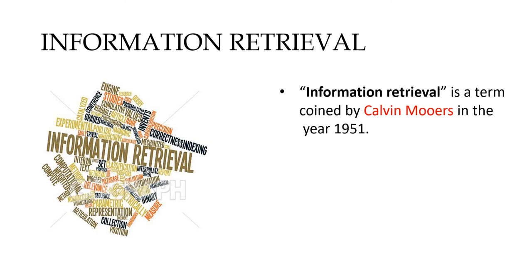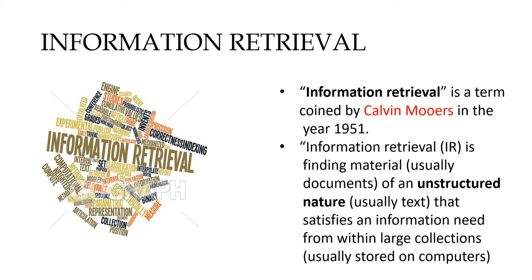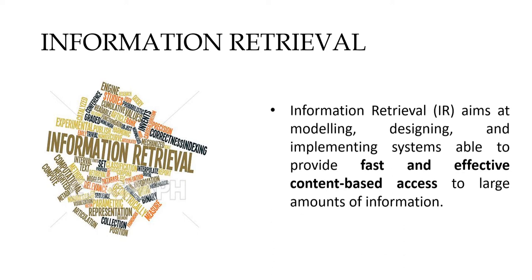The term information retrieval was coined by Calvin Mooers in the year 1951. The formal definition of information retrieval goes like this: information retrieval is finding material, usually documents of an unstructured nature. We are focusing only on text retrieval systems, and the term unstructured means data which does not have a clear semantic structure, unlike structured data which is stored in the form of tables. From unstructured data we have to fetch the relevant information which the user desires, and to do this we require a software program that facilitates users in finding their needs. This particular software program is referred to as an information retrieval system.